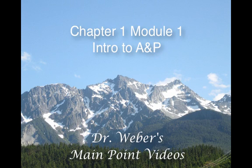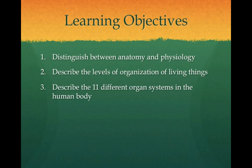This is Chapter 1, Module 1, Intro to A&P. The learning objectives for this module are: 1. Distinguish between anatomy and physiology. 2. Describe the levels of organization of living things. 3. Describe the 11 different organ systems in the human body.